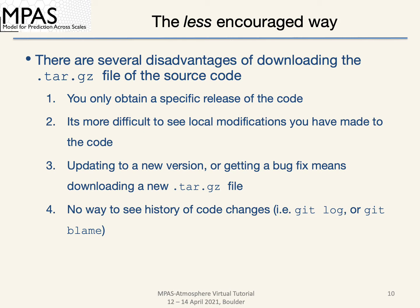Similarly, there's not an easy way to update your code to a newer version — you'll just need to download a new tar file. And lastly, there's no way to access the history of code changes. These are messages that are added when features are committed to the repository via Git, which can help explain why a specific portion of code was added.